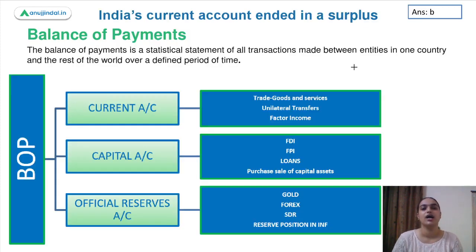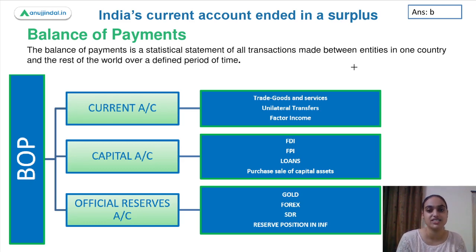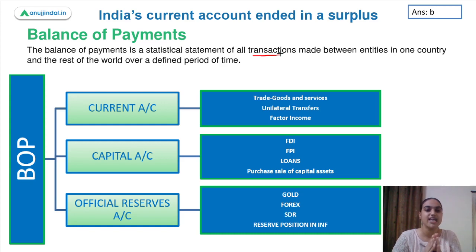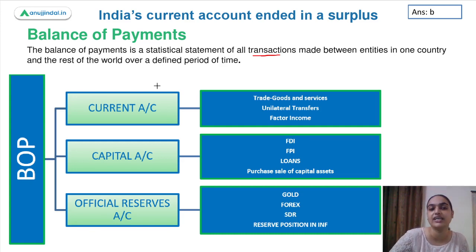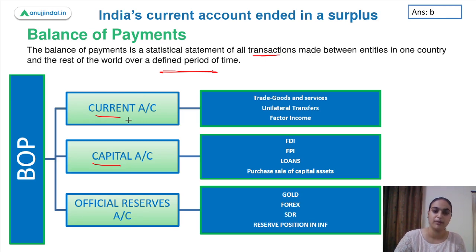What they are saying is that the current account of the year 2020-21 ended in a surplus. So what is the current account? Current account is an important part of our balance of payments. Balance of payments is a statistical record of transactions taking place between residents of one country with those of another. The different components of balance of payments include the current account, the capital account, and the official reserves account.